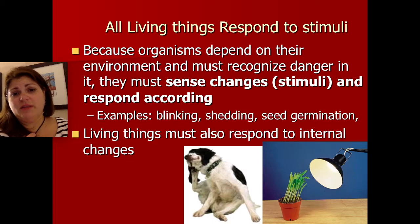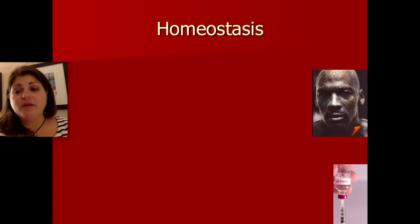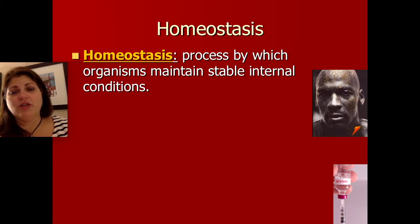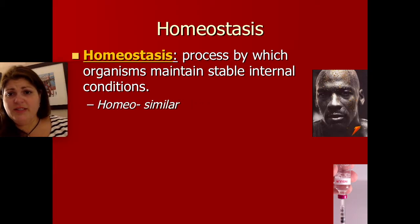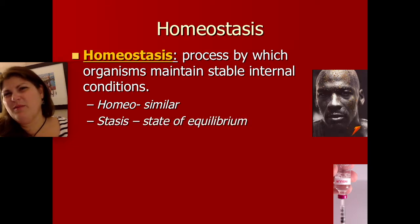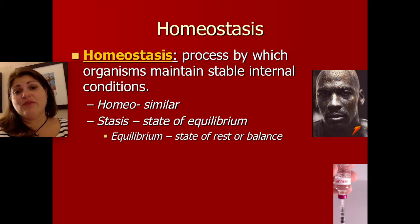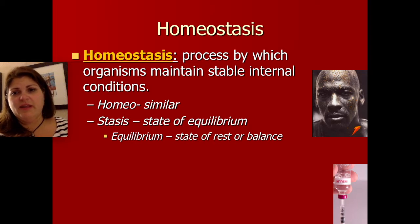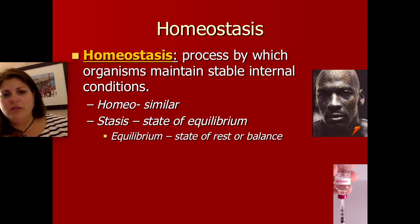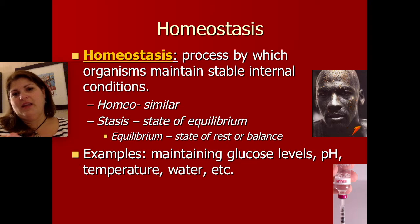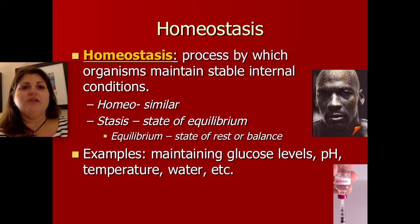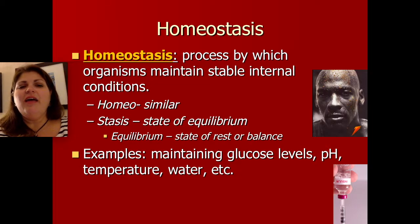Living things also have to respond to internal stimuli. When they respond to internal changes, they're undergoing something called homeostasis. Homeostasis is the process by which organisms maintain a stable internal condition. Homeo means similar, and stasis means a state of equilibrium — a state of rest or balance. We don't want our conditions fluctuating, which is why when we get too hot we sweat, and when we get too cold we shiver. We maintain homeostasis not only for temperature, but for the volume of water we have, sugar levels — that's why diabetics who can't maintain sugar levels have problems — and the pH of our bodies.